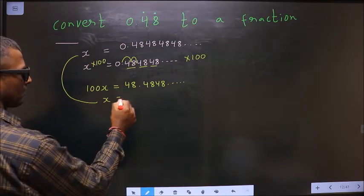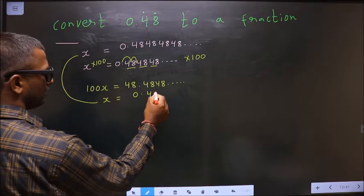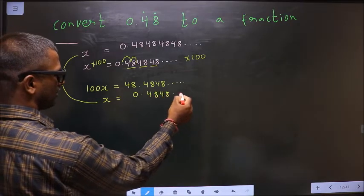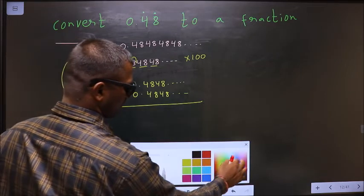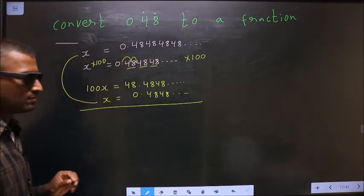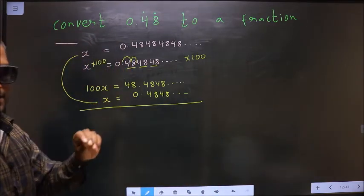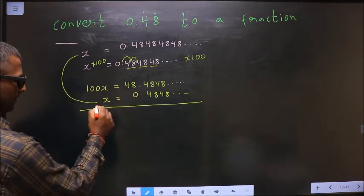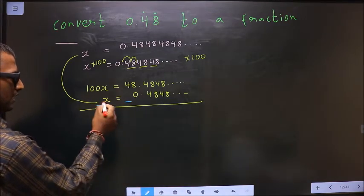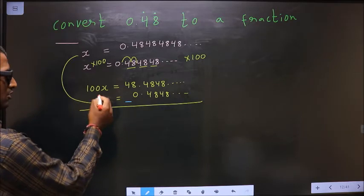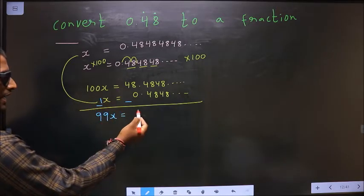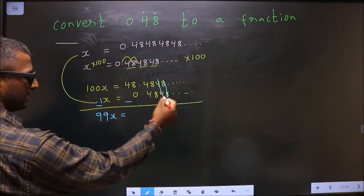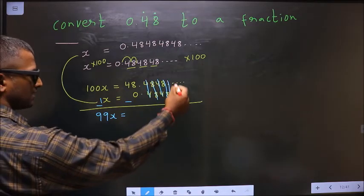Now I write this below: x equals 0.484848... Now you subtract these two. 100x minus 1x is 99x, and here 8, 8, 4, 4, 4, 4—they cancel out.